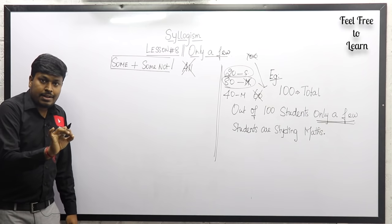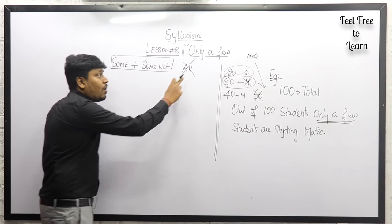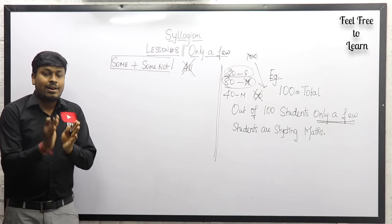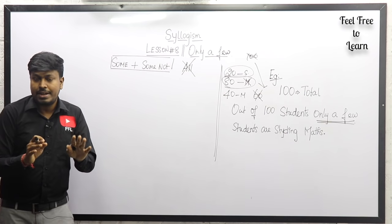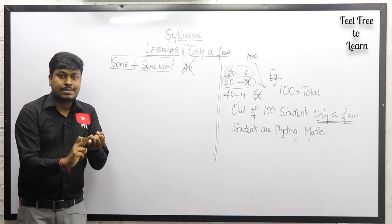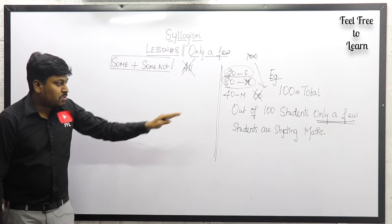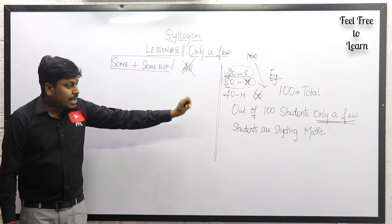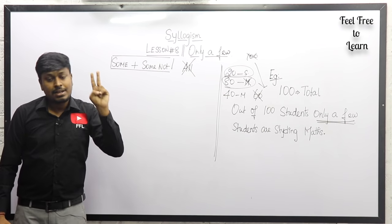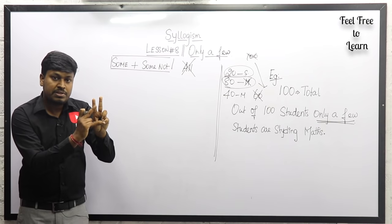Out of 100 students, if only a few are studying mathematics — say 20 — the remaining will not. So the conclusion 'all students are studying mathematics' is false. To summarize: if you see the word 'only a few' either in a statement or a conclusion, 'some' is correct, 'some not' is correct, but 'all' is not at all correct — it is wrong.